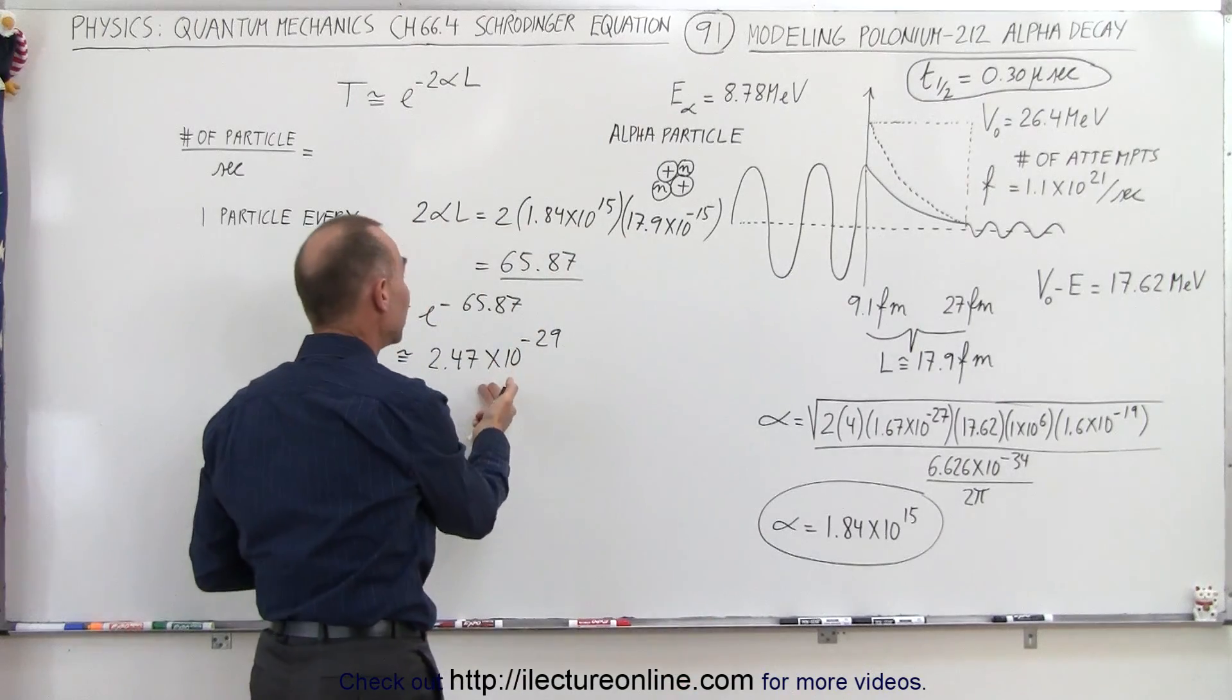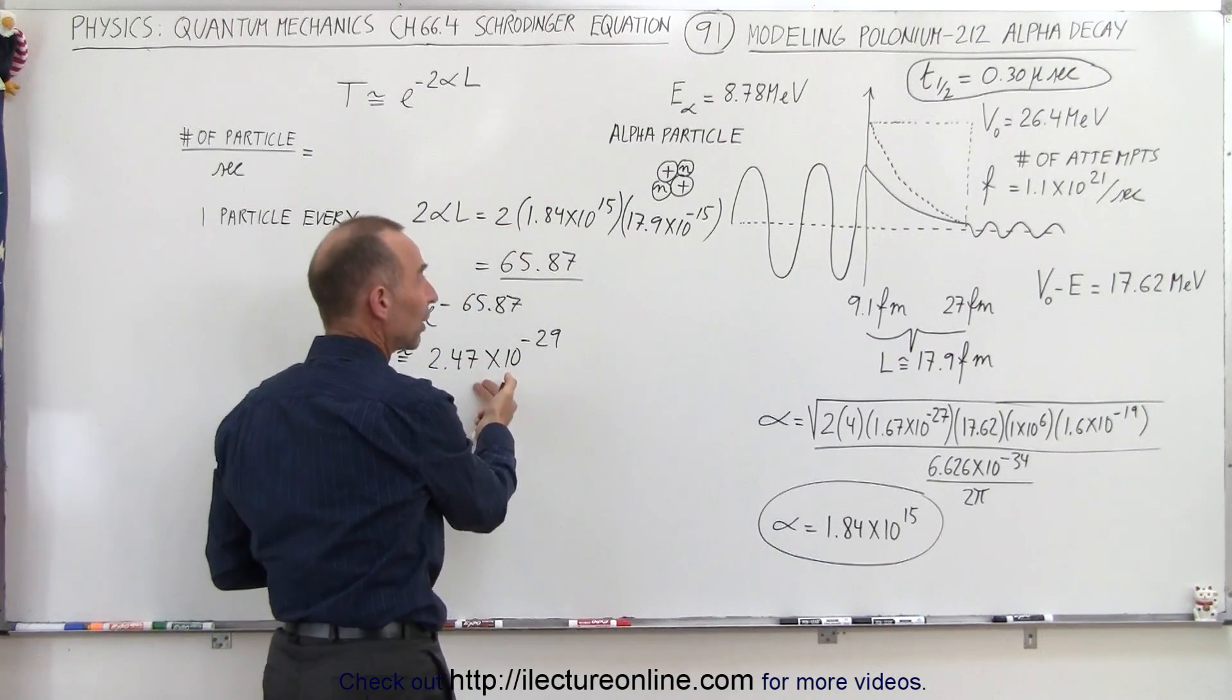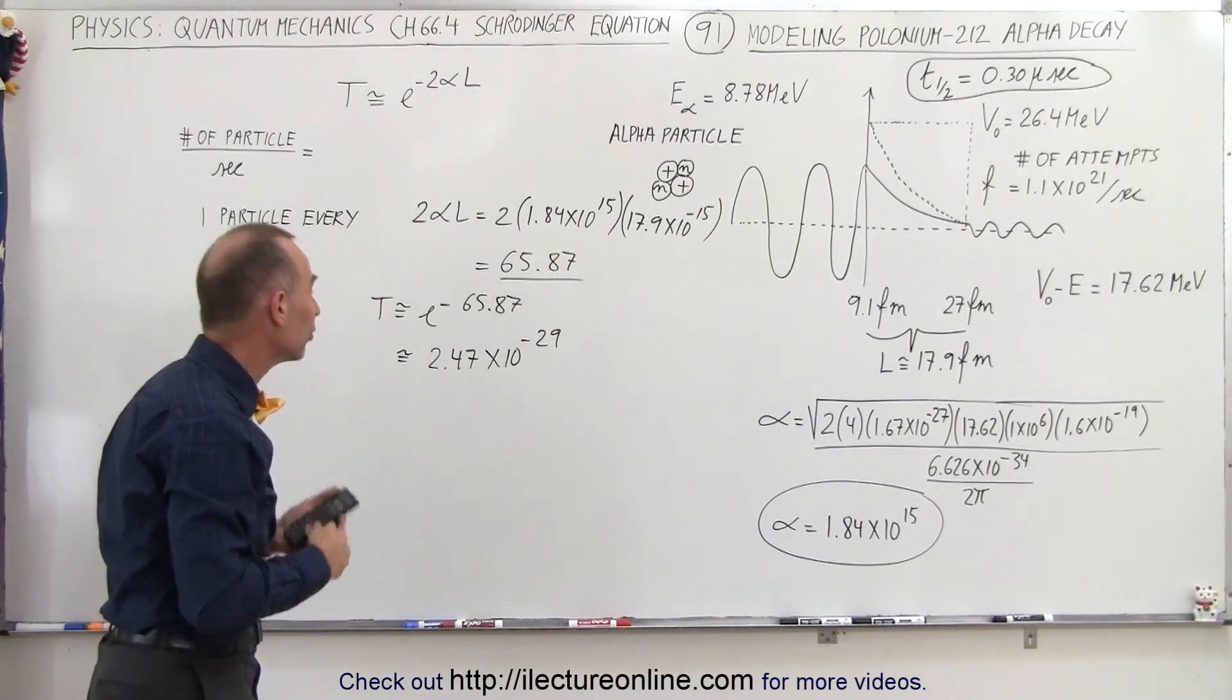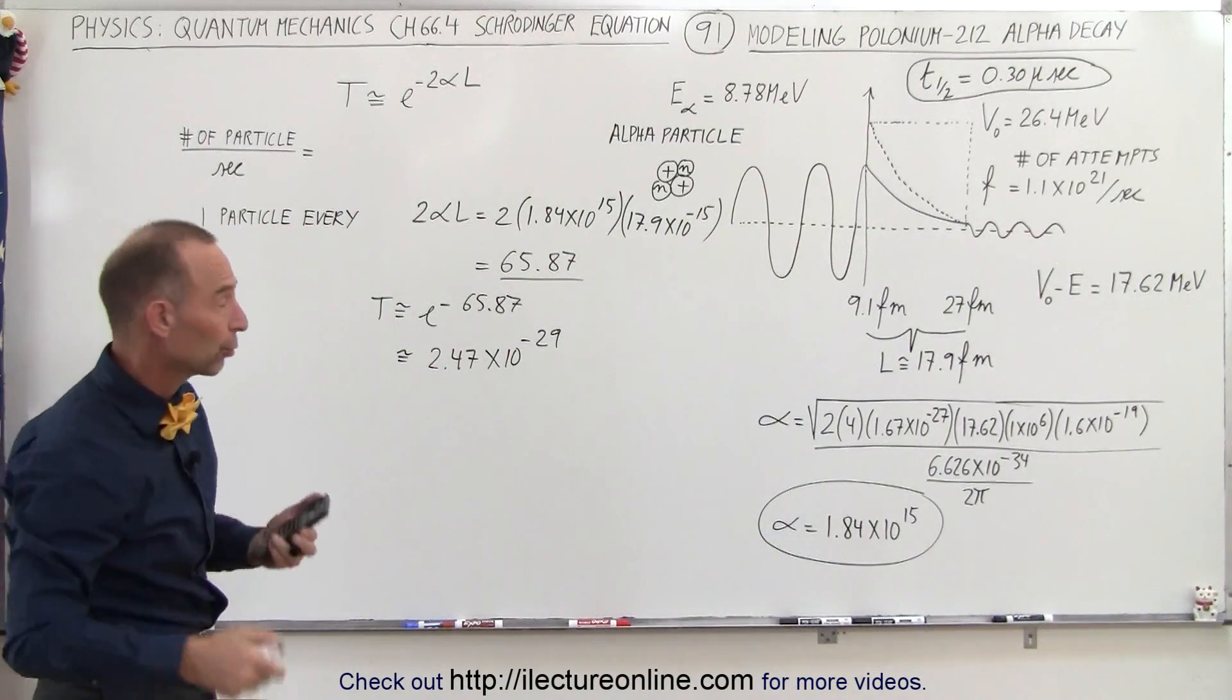So if this is the probability that every time it tries it's going to break through, and that's the number of tries per second, we can then figure out the number of particles that will breakthrough per second.